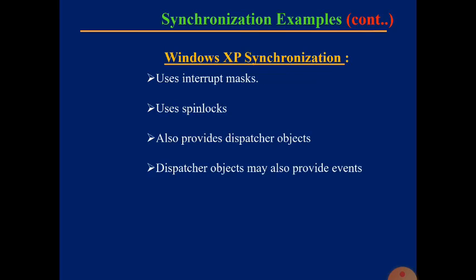Moving to Windows XP synchronization: the first point is it uses interrupt masks to protect access to global resources on uniprocessor systems. The second point is it uses spin locks on multi-processor systems. The third point is it also provides dispatcher objects which may act as either a mutex or semaphore.